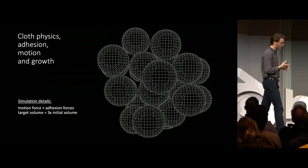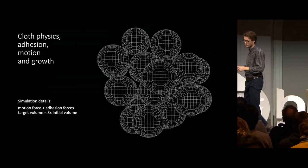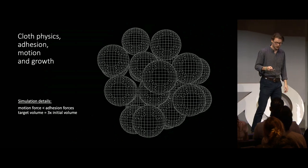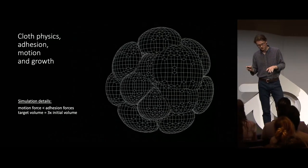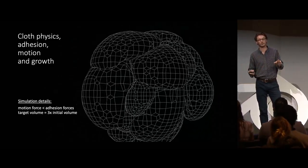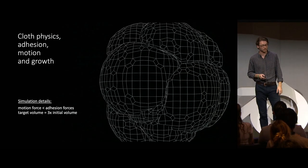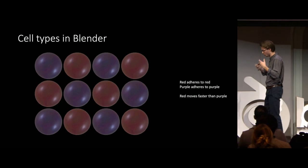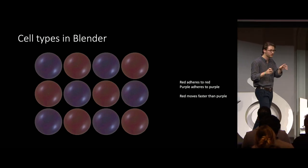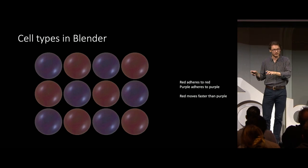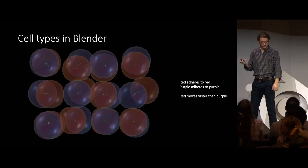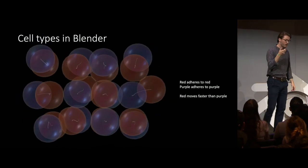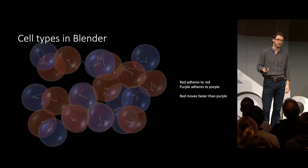Now that we have soft body physics, motion, growth, and adhesion, we can start creating nice simulations of growing tissues. Each of the 22 cells here moves independently but adheres to each other, and they grow until reaching a volume about three times higher than their initial volume. We also implemented different cell types in Blender — a type is defined as a unique set of biophysical properties. In this example, cell-cell adhesion is specific to each type: red will only adhere to red, purple to purple, and the red cells actually move faster than the purple cells.